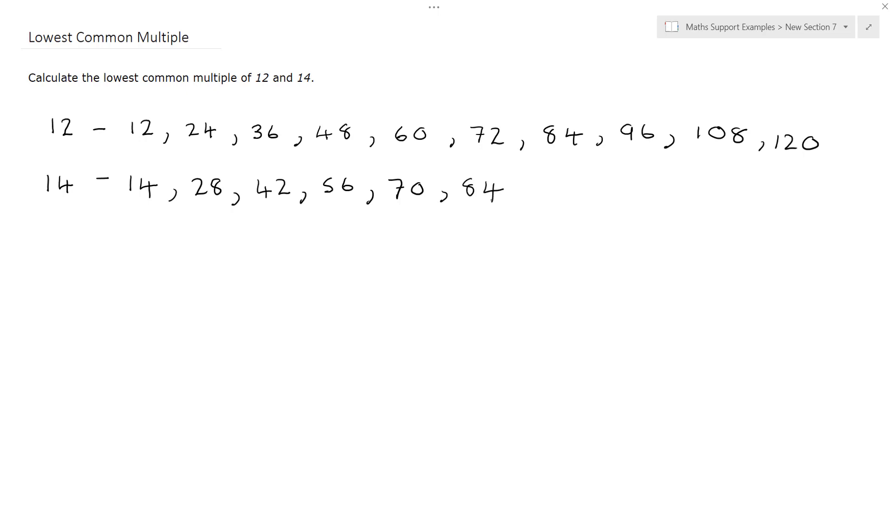84 is both a multiple of 12 and a multiple of 14. And it's the first one to occur, so that's our lowest common multiple. So we can write down the lowest common multiple of 12 and 14 is 84.